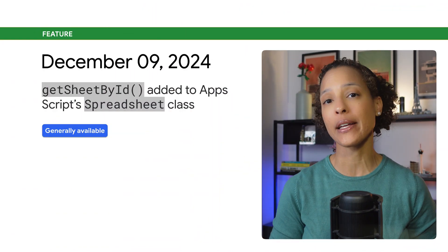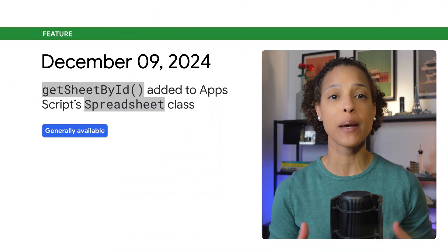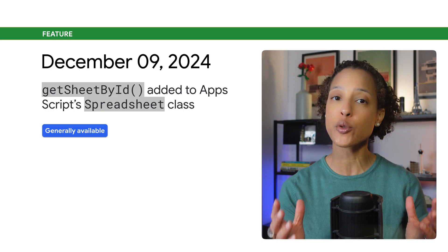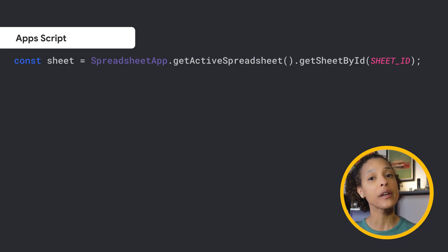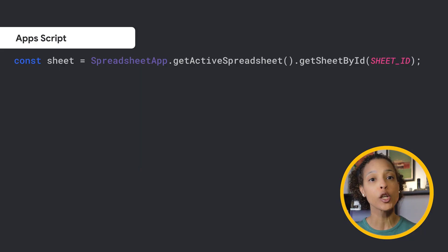The Get Sheet by ID method has been added to Apps Script's Spreadsheet class of the Spreadsheet service. This method enables you to get a sheet in a spreadsheet using its unique ID.